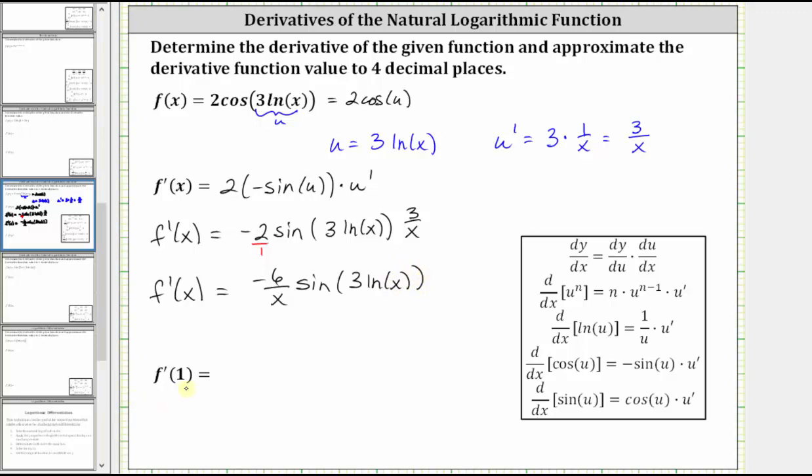And now to find f prime of one we substitute one for x into the derivative function, which gives us negative six divided by one times sine of three natural log one. Well, natural log one is equal to zero and the sine of zero is equal to zero. And therefore this derivative function value is going to be zero. So there's no reason to round.